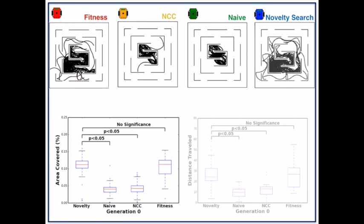Now if you look at the distance metric on the lower right, we can see that novelty search travels further than naive and travels further than NCC. We can also see that novelty search travels the same amount as the traditional objective-based EA.